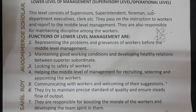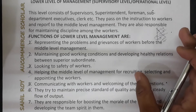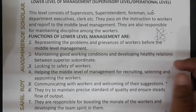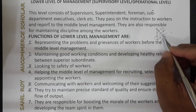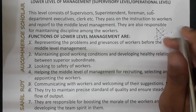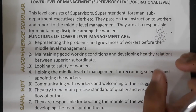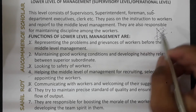The sixth point is that they try to maintain precise standards of quality and ensure a steady flow of output. The supervisory level managers make sure that quality standards are maintained by the workers. Checking standard quality and ensuring that whatever is being produced meets standards is the responsibility of lower level management.